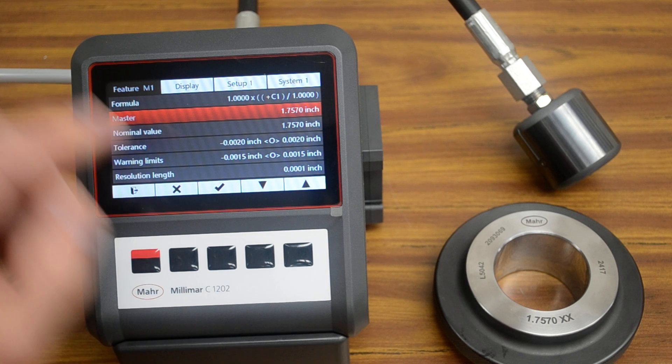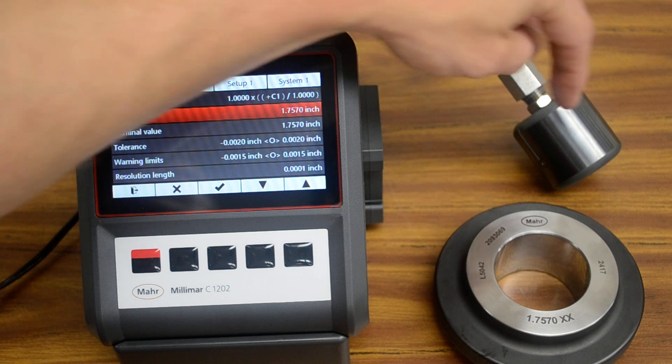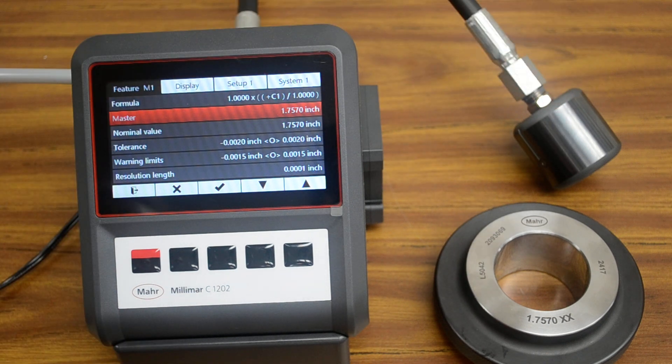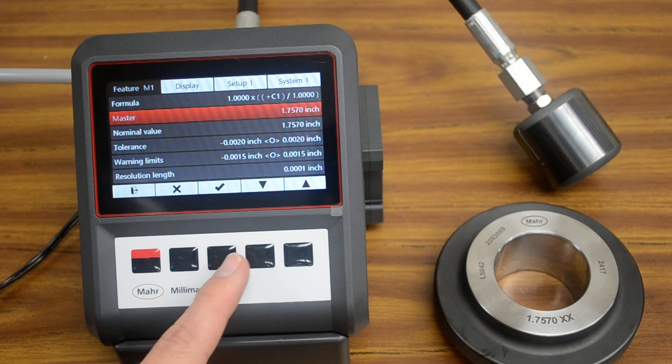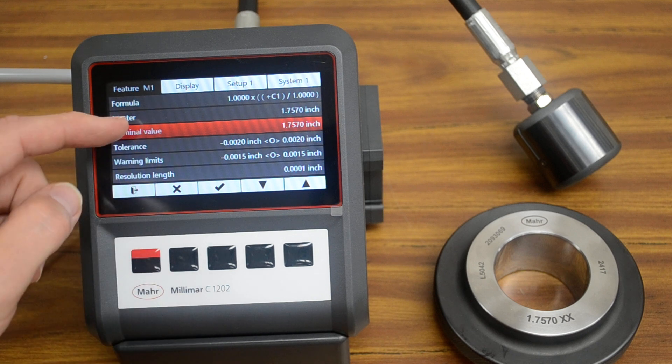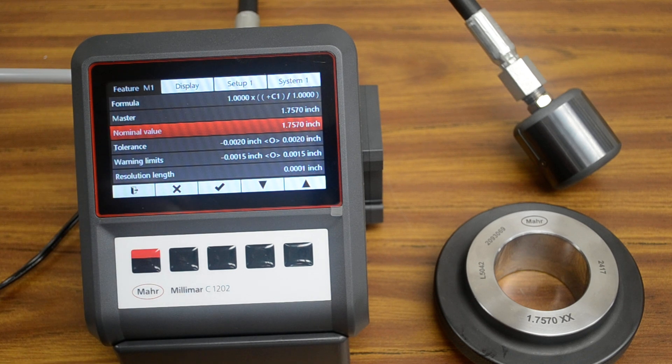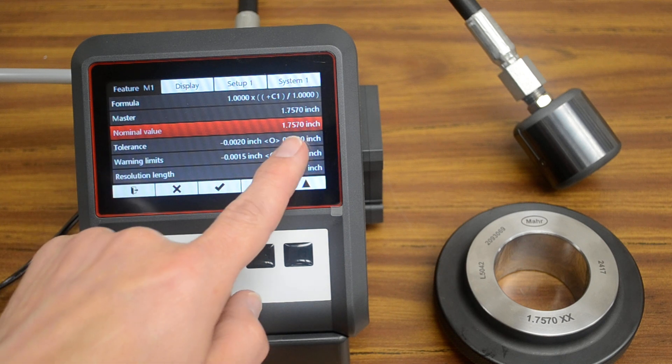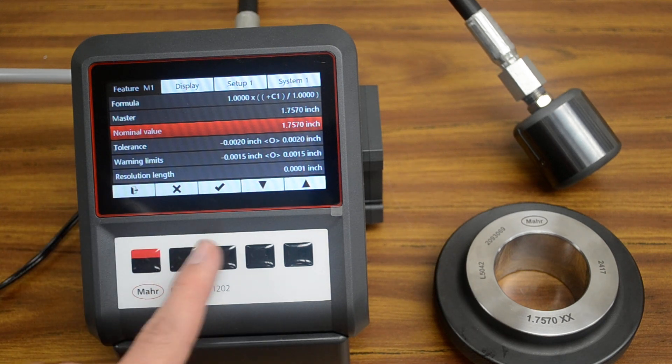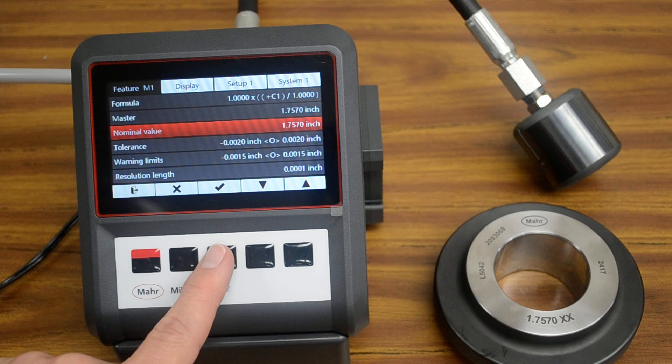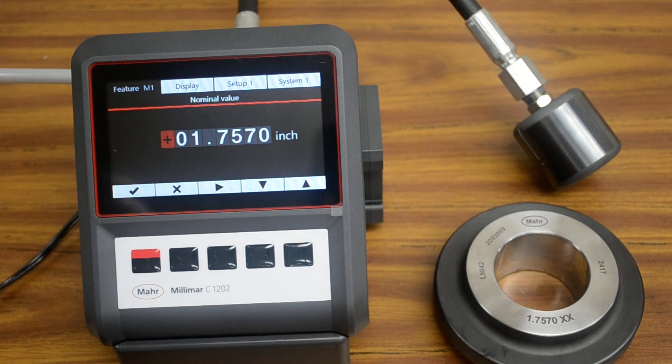The nominal value is the value of your part, of the hole you're measuring. All of the data entry for these numbers is very similar. What you want to do is select the value you want to change, and press the soft key under the check mark. That will take you into that value.